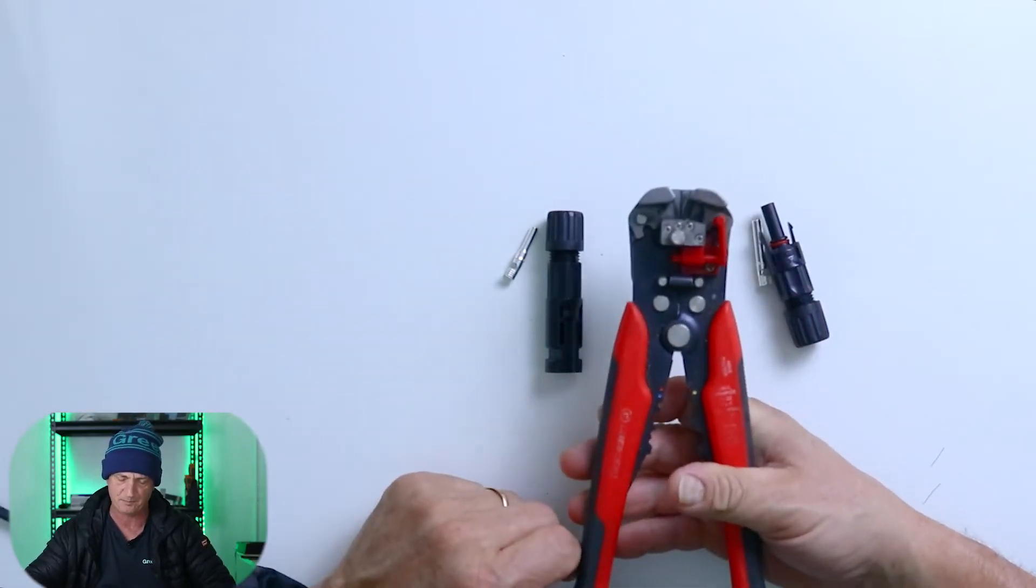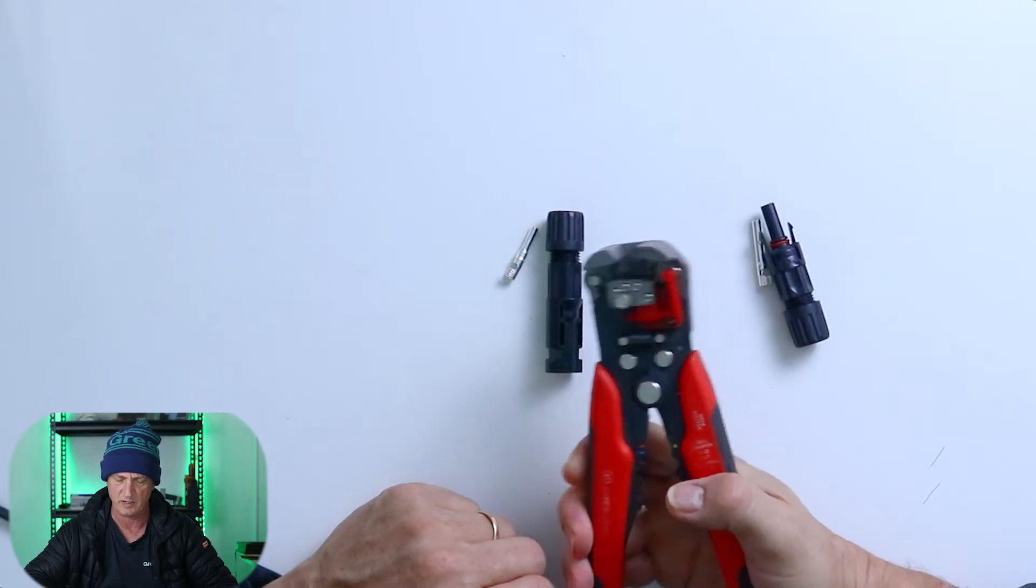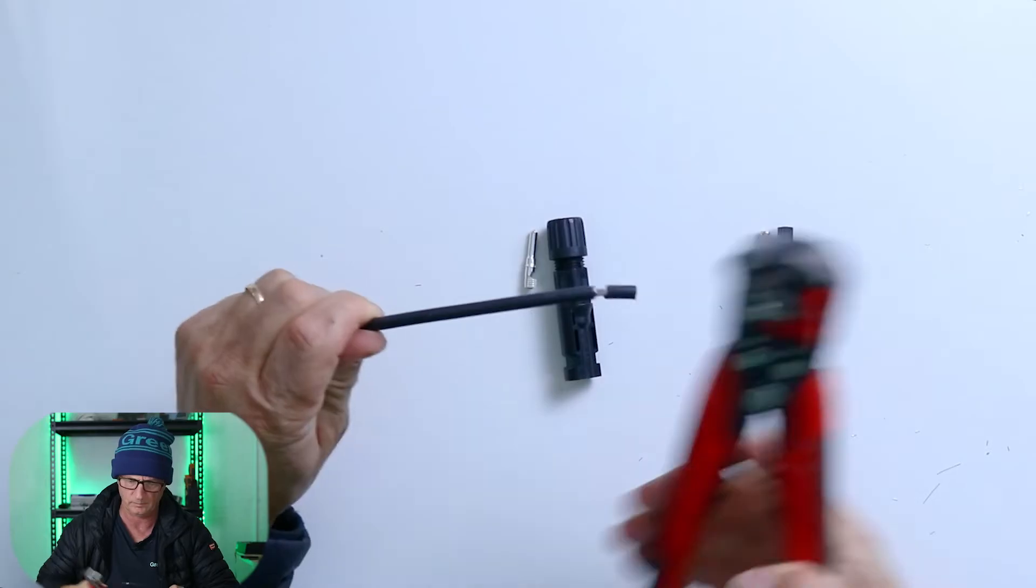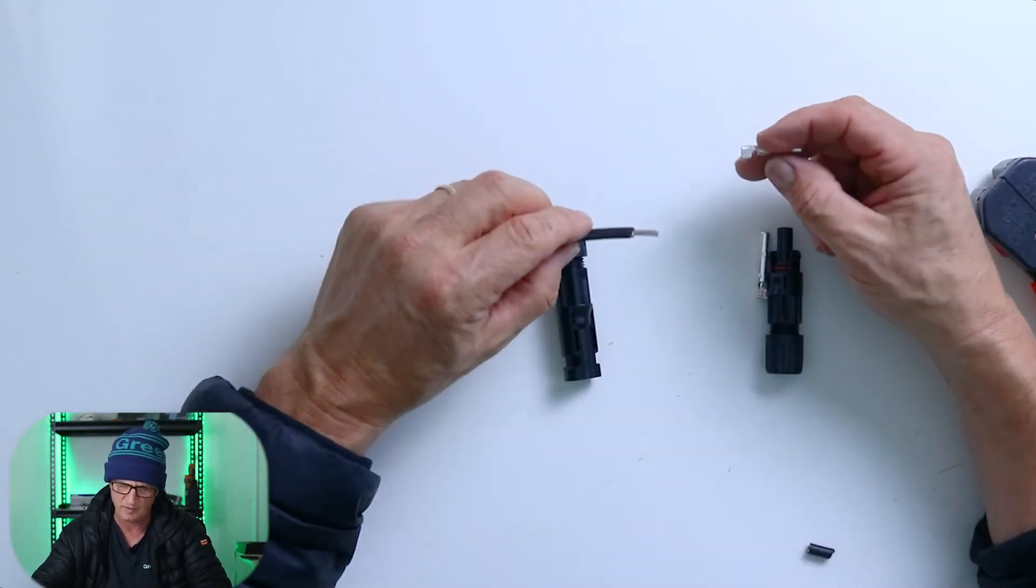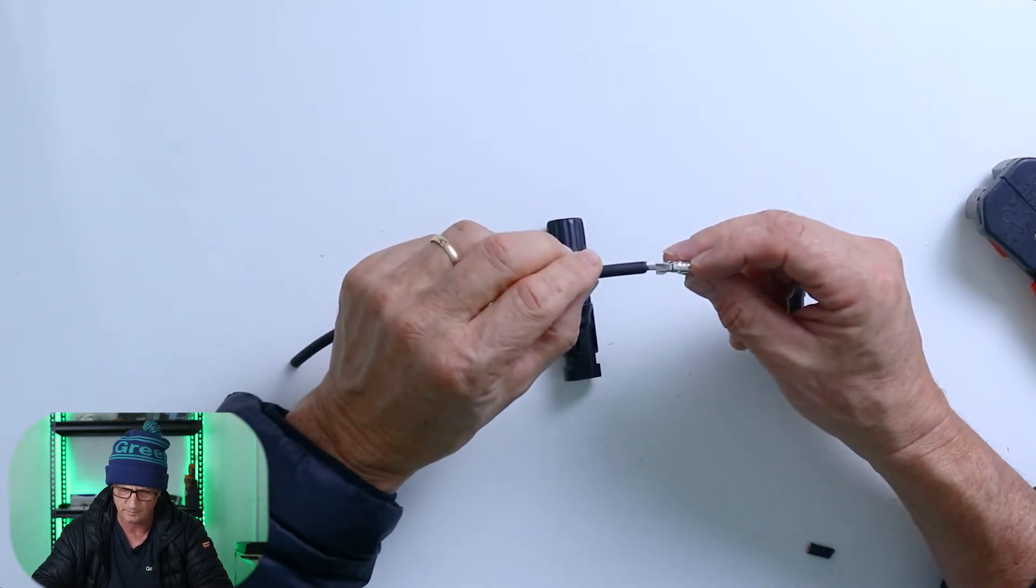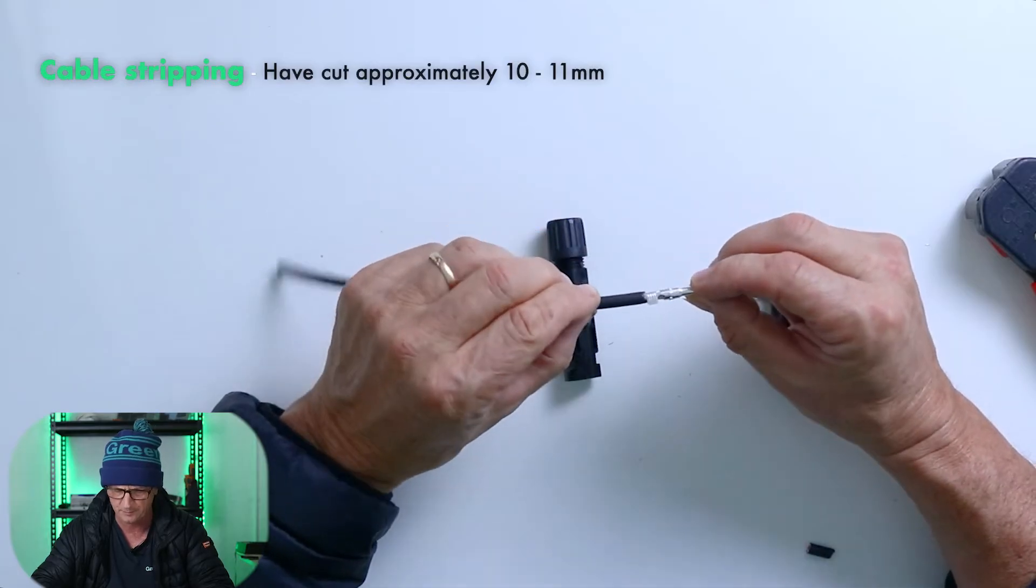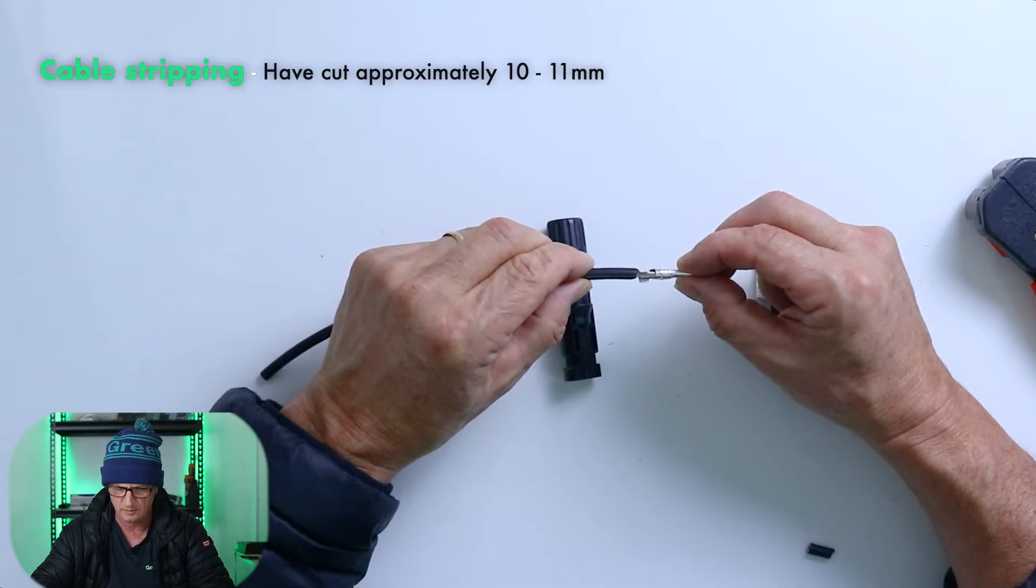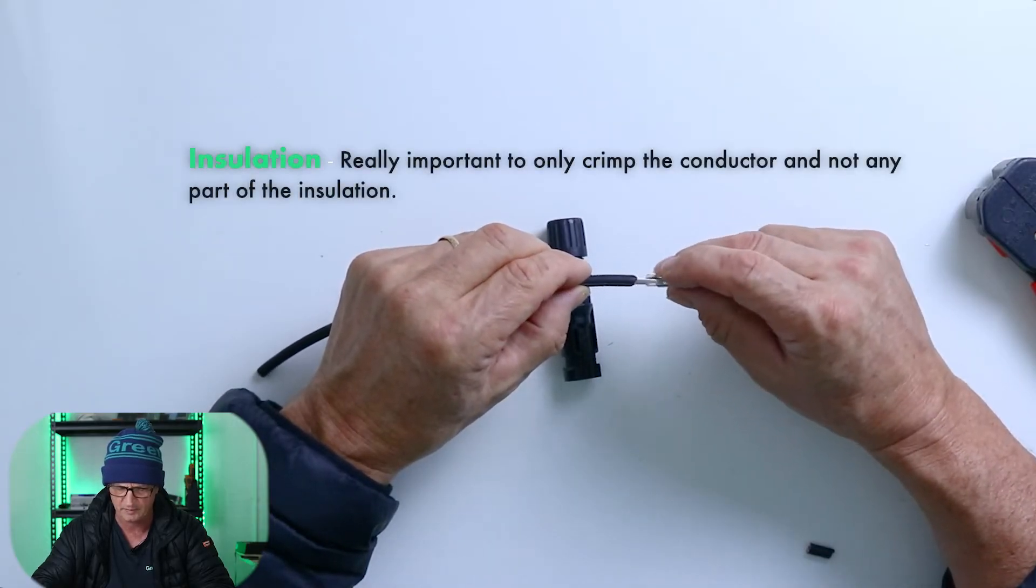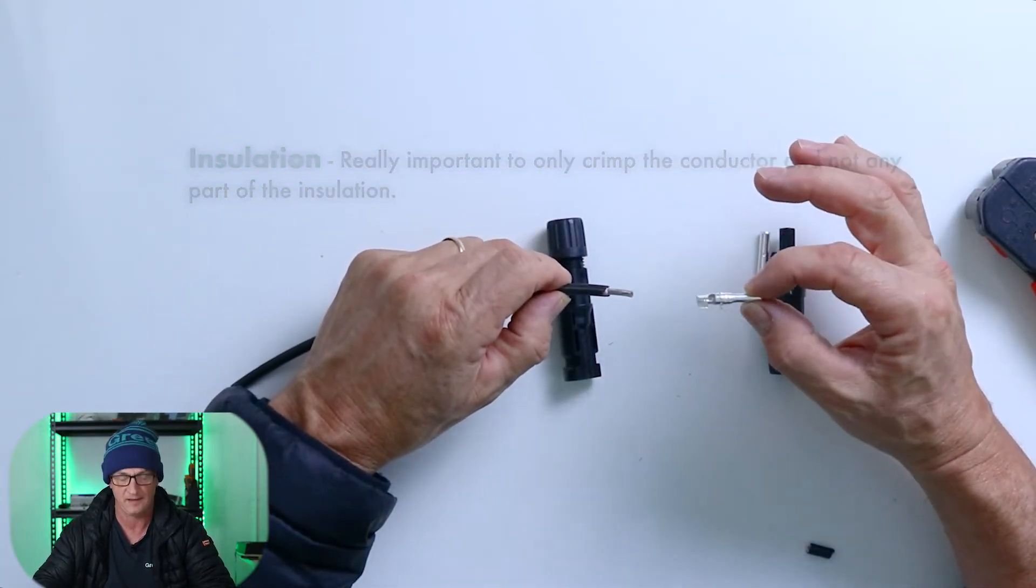So with these particular cable strippers, you can see the action cable goes in here, presses down, separates. Now you can see I've cut probably 10, 11 mil. And I place it in here. Making sure that there are no strands. Now notice how I have left maybe half a mil between the insulation and the actual tabs. You don't want to make this too long at all. Because if you do, you'll have to cut it. So I've got the male insert, which goes into the female MC4.